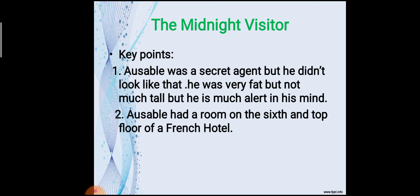Now let's understand the key points. Ausable was a secret agent but he didn't look like one — he was very fat and not very tall, but he is very alert in his mind. Ausable had a room on the sixth floor, the top floor, of a hotel named the French Hotel.